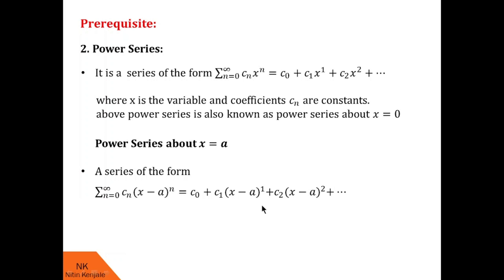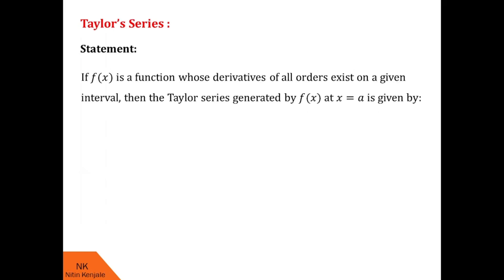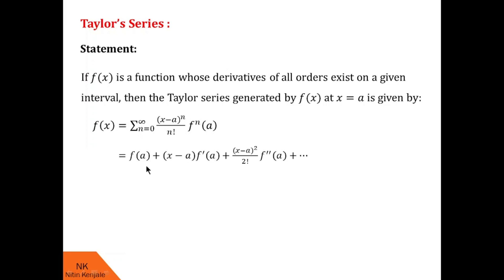Now let us proceed to understand what is Taylor series. Taylor series is defined as follows: if f(x) is a function of x such that its derivatives of all orders exist on a given interval, then the Taylor series generated by f(x) about point x = a is given by summation (x - a)^n / n! into the nth derivative of f at point a, where n varies from 0 to infinity. Expanding this, the Taylor series is f(a) + (x - a)·f'(a) + (x - a)²/2! · f''(a) and so on.